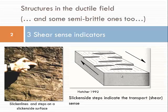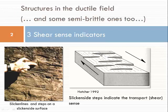Slicken sides, which you know from the second and first year courses, are among the most important shear sense indicators. Hard particles along the fault surface have left grooves and striations indicating the direction of movement. However, striations alone don't tell us whether the missing block moved in one direction or the other. Slicken side steps always face in the direction in which the missing block, in this case the hanging wall block, has moved. The linear fabric elements of the slicken lines indicate the shear direction.